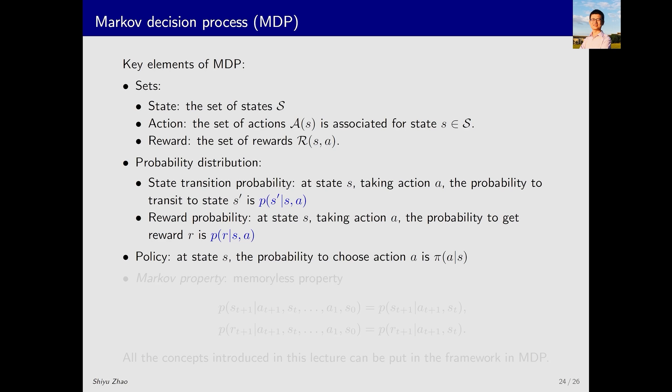The third key element of MDP is policy. At state S, there is a policy to indicate the probability of taking action A.